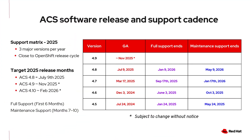The release of ACS 4.8 brings an updated support matrix. Full support starts at the GA or release of a minor version and lasts for six months. That means with the July 9th release, full support will end on January 9th, 2026. During this time, security advisories and high-priority bug fixes are provided, and users are expected to stay on the latest supported version.